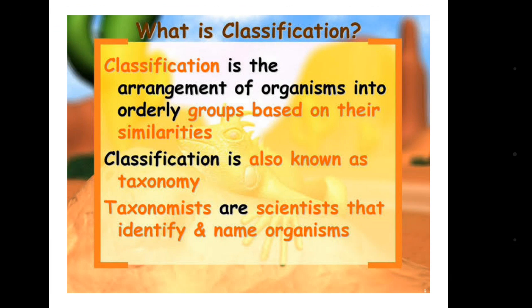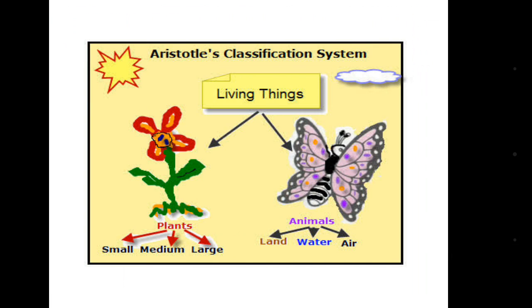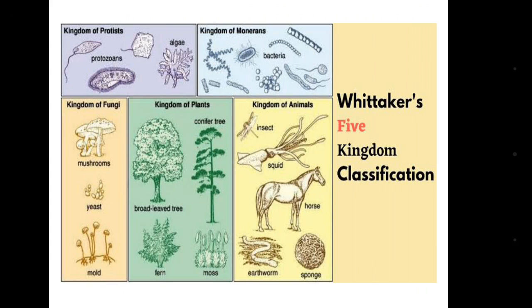Classification is discussed in the subject known as taxonomy. At first, Aristotle gave a classification system of living things, dividing plants and animals into two divisions based on their characteristics. Then we came to know about Whittaker's five kingdom classification.